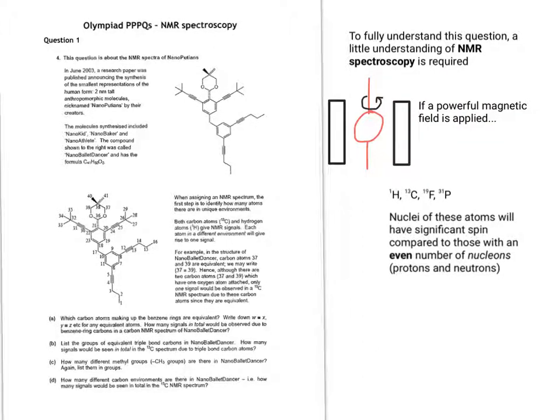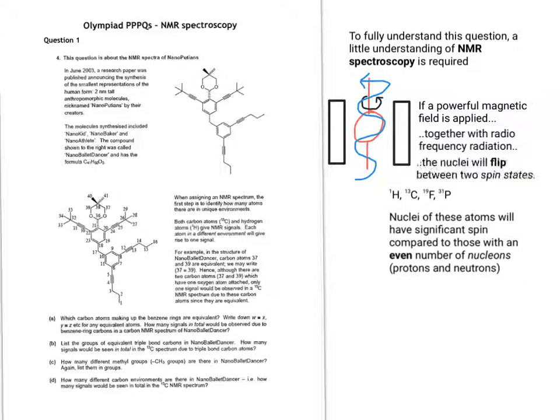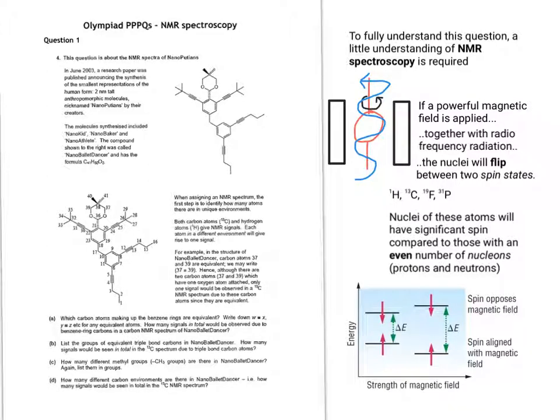The importance of the nucleus having an odd number of total neutrons or protons, called nucleons, is that the spin of these nuclei is significant compared to those with an even number of nucleons. We can make use of this because the spin responds to a magnetic field. If you apply a magnetic field and radiofrequency radiation through the sample, the nuclei will flip between two spin states.